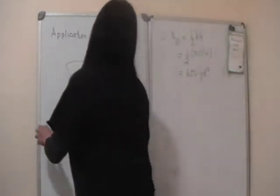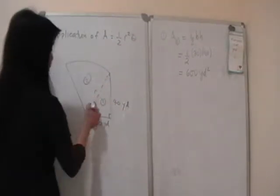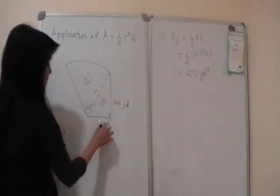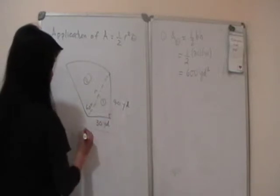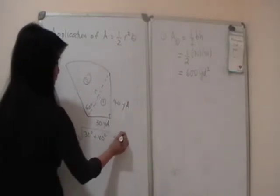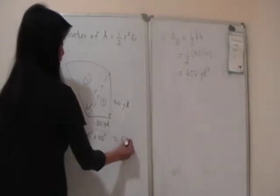So in order to find r, let me just do it here. We can simply use the Pythagorean theorem. That's going to be 30 squared plus 40 squared. You guys can verify that this is going to be 50 yards.